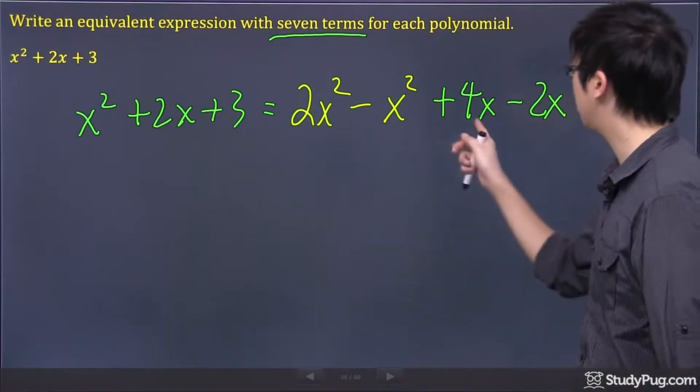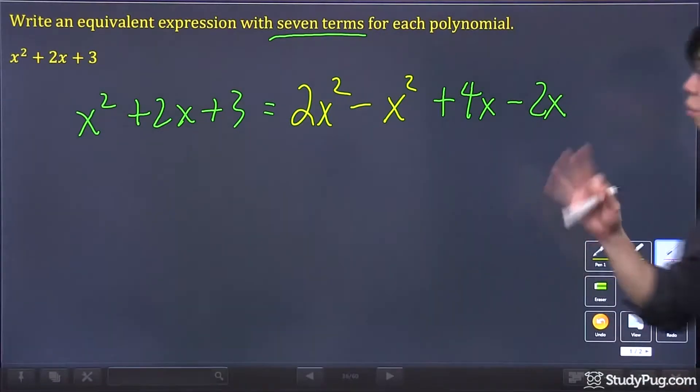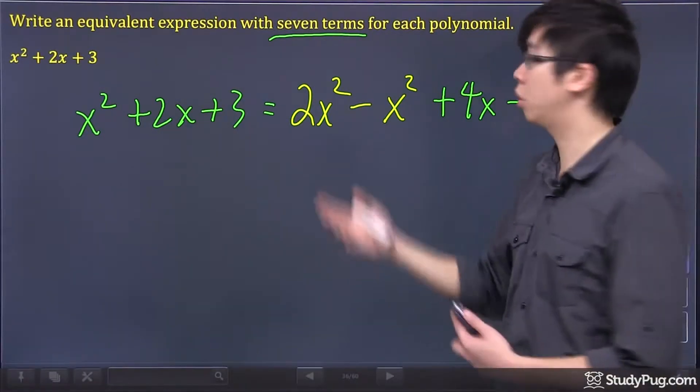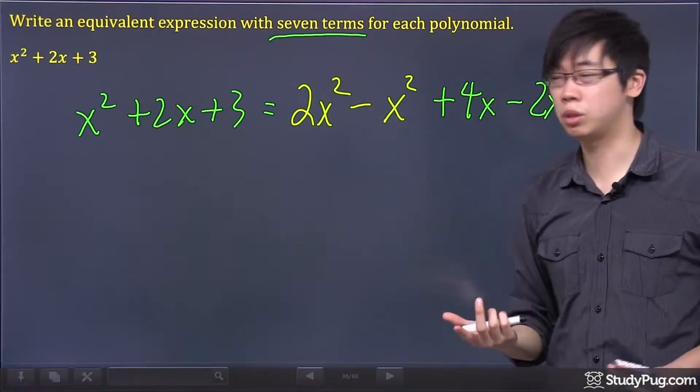So, so far I got 1, 2, 3, 4, 4 terms now. So I need 3 more terms to satisfy the questions, right? The question says 7 terms in total.